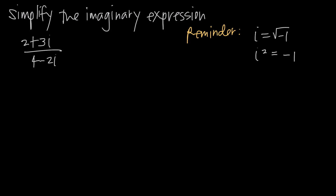In this video, we're talking about how to use conjugate method to simplify an imaginary expression. The imaginary expression that we've been given is this fraction here where we have 2 plus 3i in the numerator and 4 minus 2i in the denominator.